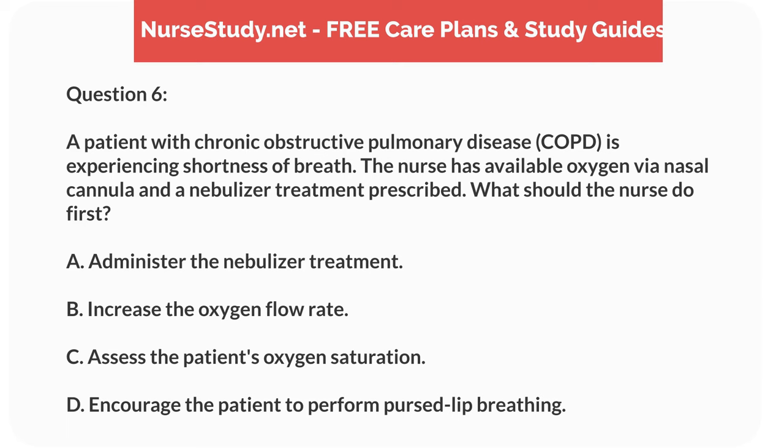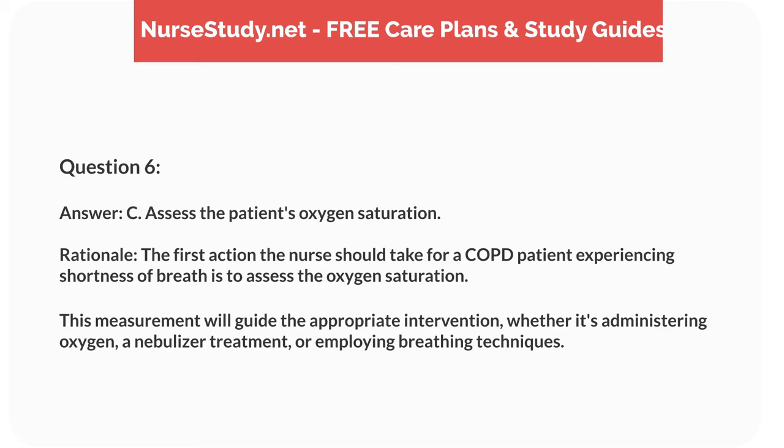Question 6. A patient with chronic obstructive pulmonary disease (COPD) is experiencing shortness of breath. The nurse has available oxygen by a nasal cannula and a nebulizer treatment prescribed. What should the nurse do first? A. Administer the nebulizer treatment. B. Increase the oxygen flow rate. C. Assess the patient's oxygen saturation. D. Encourage the patient to perform pursed lip breathing. Answer: C. Assess the patient's oxygen saturation. Rationale: The first action the nurse should take for a COPD patient experiencing shortness of breath is to assess the oxygen saturation. This measurement will guide the appropriate intervention, whether it's administering oxygen, a nebulizer treatment, or employing breathing techniques.